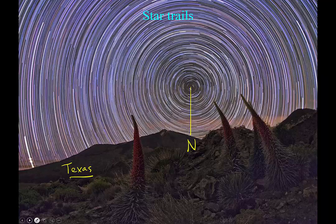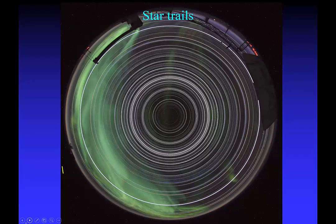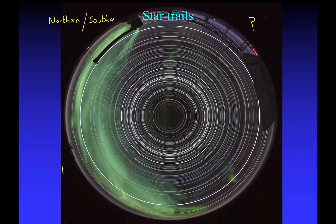In the next photograph, you can see more star trails. I wonder where this photograph was actually taken — any idea? The clues are all there in what you can see in the sky. Do you think it's in the Northern Hemisphere or in the Southern Hemisphere? Well, the clue's right here: there's no star in the middle, so it can't be in the Northern Hemisphere. It must be in the Southern Hemisphere.